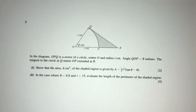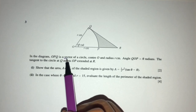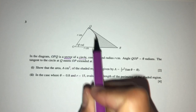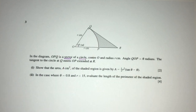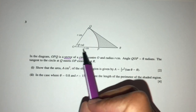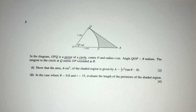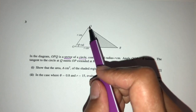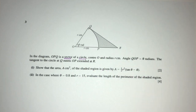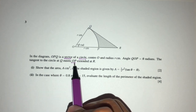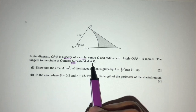In this question, in the diagram, OPQ is a sector of a circle, so we have O, P, and Q. The radius is given to you by R, so the radius of this sector is R centimeters. Now angle QOP is theta radians. The tangent to the circle at Q meets OP extended at R.